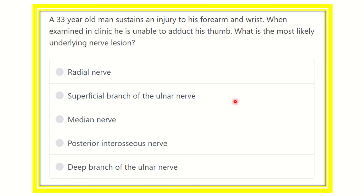Hello everyone, welcome to another question and answer session. A 33-year-old man sustains an injury to his forearm and wrist. When examined in clinic, he is unable to adduct his thumb. What is the most likely underlying nerve lesion?